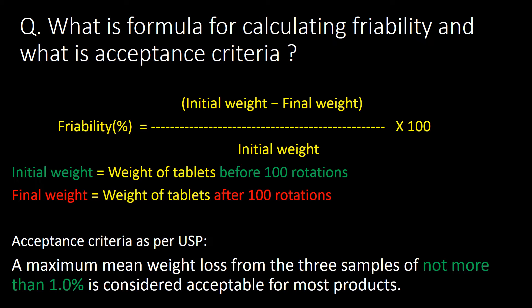What is the formula for calculating friability, and what is the acceptance criteria? Percent friability is calculated as: initial weight minus final weight, divided by initial weight, multiplied by 100. Here, initial weight refers to the weight of tablets before 100 rotations, and final weight refers to the weight after 100 rotations. The acceptance criteria as per USP is a maximum mean weight loss from 3 samples of not more than 1%, which is considered acceptable for most products.